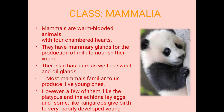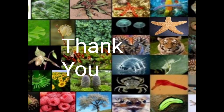Most mammals give birth to live young ones. However, a few of them, like the platypus and the echidna, lay eggs, and some like kangaroos give birth to very poorly developed young ones. So in mammals, some animals are oviparous and some give birth to young ones. Human beings are also categorized in this class.